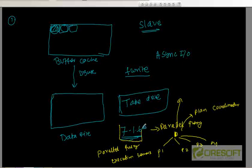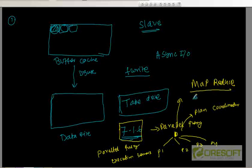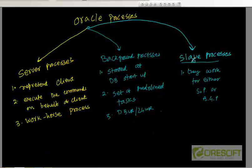This parallel query feature has been available starting from Oracle 7.1.x. It is conceptually similar to map-reduce, which started around 2003. This is Oracle's approach to parallel query, and this is a slave process — slave processes are processes that work on behalf of either a server process or a background process.